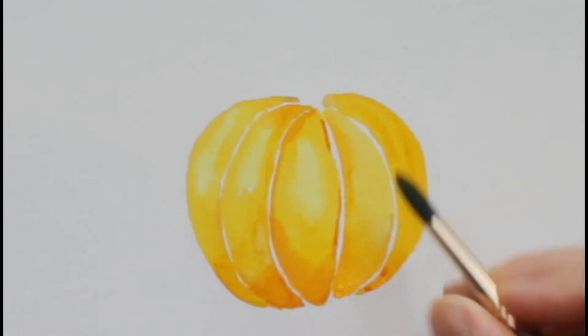Adding a little bit darker. This side of the pumpkin has less light hitting it, so it's darker.